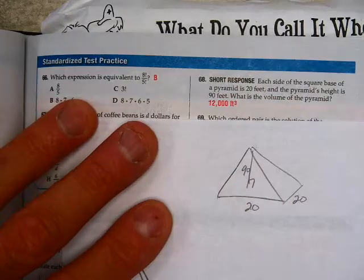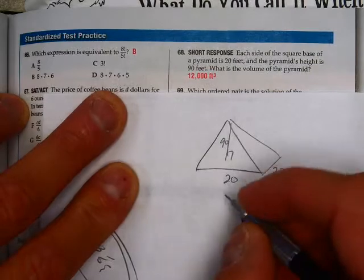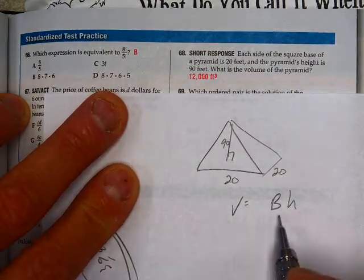Anything on the multiple choices? First page, 66 through 69. Any of these? 68.